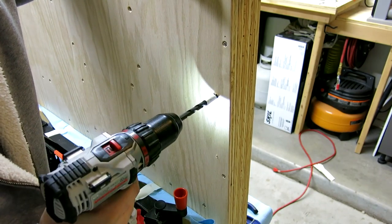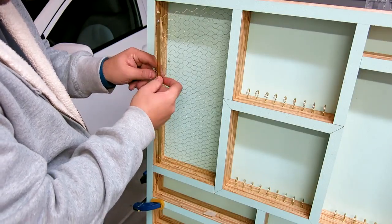I'm counter-sinking the hole for the nut. I want the backside of this board to be able to sit flush up against the wall.